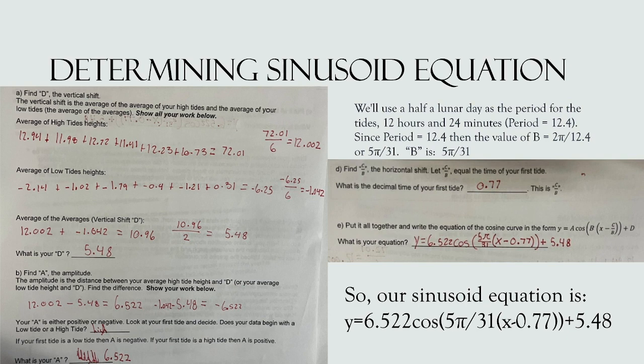Next, we find c over b. The decimal time for our first tide is 0.77, which gives us our c over b value. Putting it all together, we form the equation: y = 6.522 · cos((5π/31)(x − 0.77)) + 5.48.